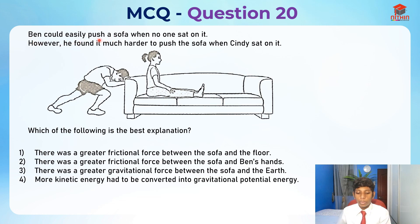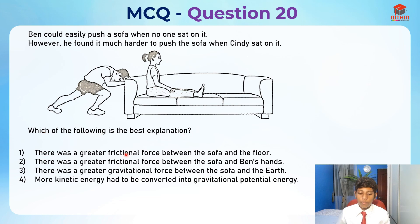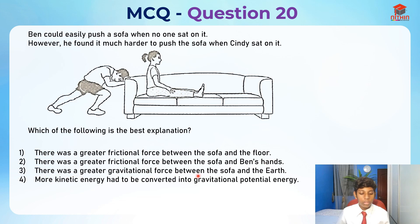Ben could easily push a sofa when no one sat on it, however he found it much harder to push the sofa when Cindy sat on it. Which of the following is the best explanation? (A) There was a greater frictional force between the sofa and the floor. (B) There was a greater frictional force between the sofa and Ben's hands. (C) There was a greater gravitational force between the sofa and the earth. (D) More kinetic energy had to be converted into gravitational potential energy.